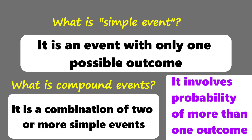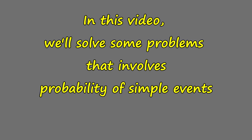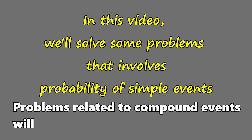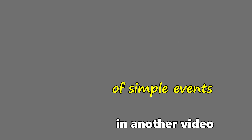What is a simple event? It is an event with only one possible outcome. What is a compound event? It is a combination of two or more simple events — it involves the probability of more than one outcome. In this video, we'll solve some problems that involve probability of simple events. Problems related to compound events will be discussed in another video.